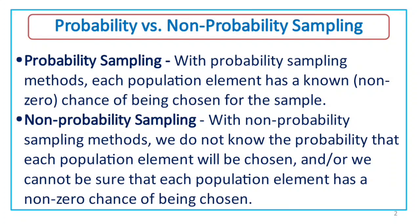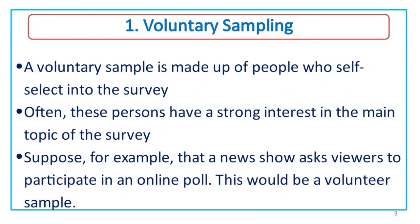The first non-probability sampling method is made up of people who self-select into the survey. Often these people have a strong interest in the main topic of the survey. For example, a news show asks viewers to participate in an online poll — this would be a volunteer sample.